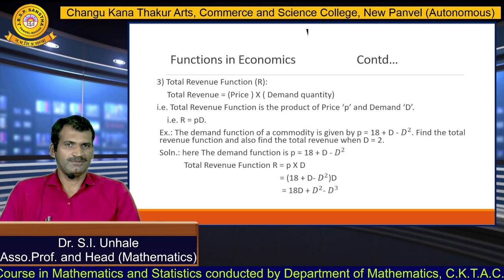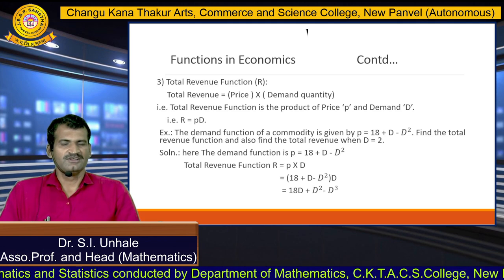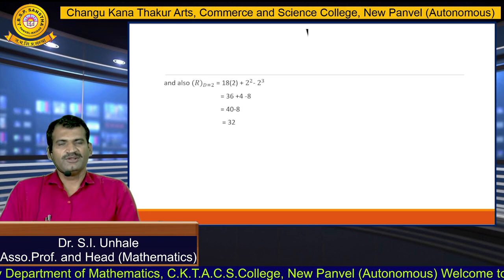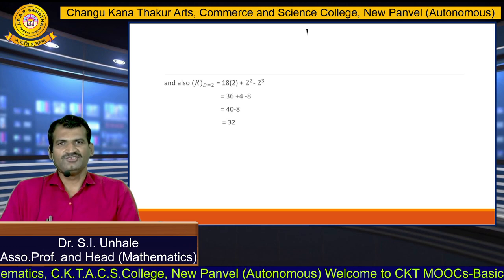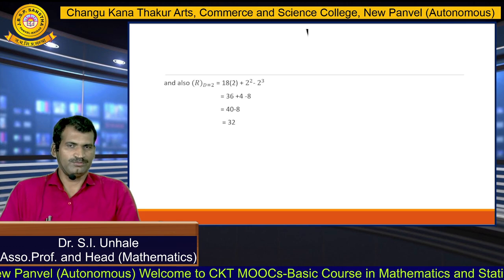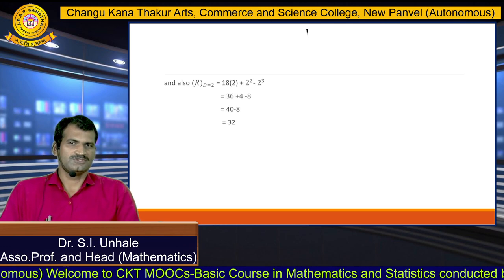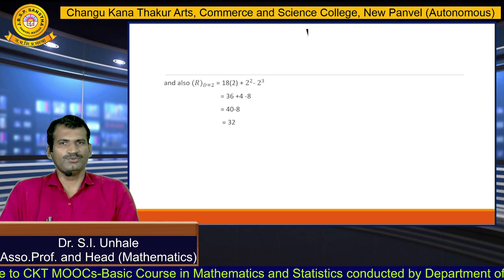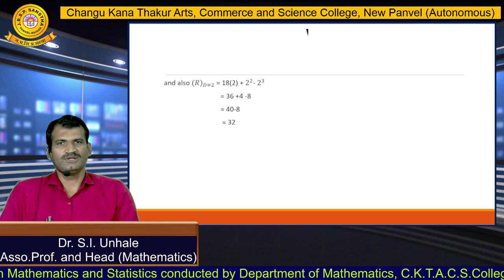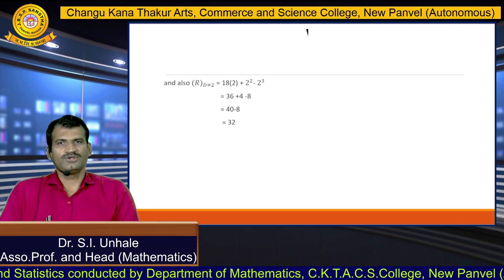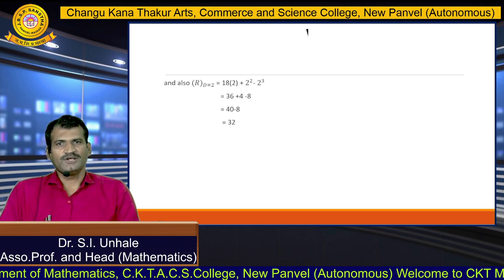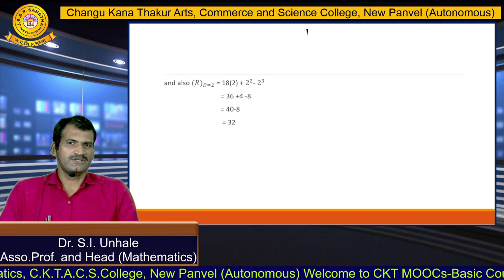For this commodity, we found the total revenue function R using the above formula. Now we find the total revenue when demand is 2 units — that is, we put d equals 2 in R equals 18d plus d² minus d³. That gives 18 times 2 plus 2² minus 2³, which is 36 plus 4 minus 8, giving us 32. So the total revenue R is 32 when demand is 2 units. This is the example of the total revenue function and how to calculate it when the demand is given.